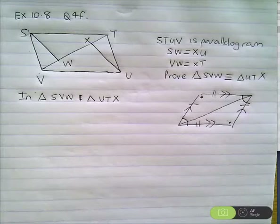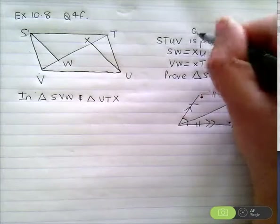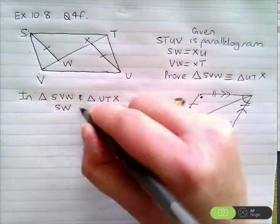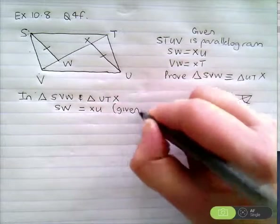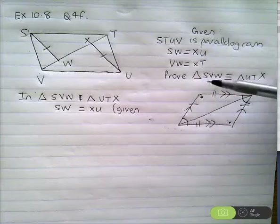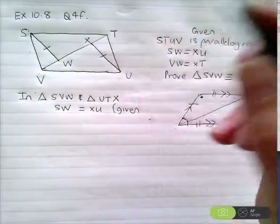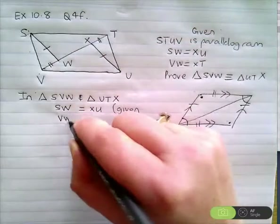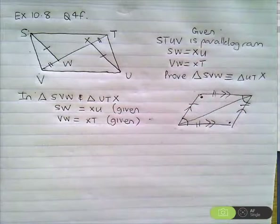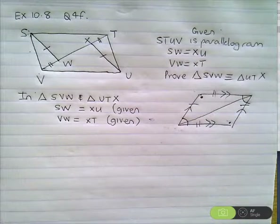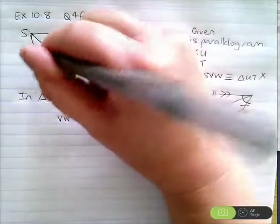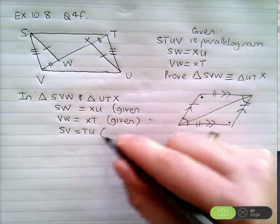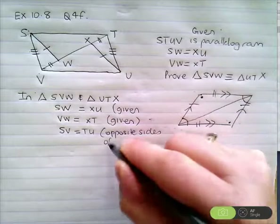They've already given us some information, so let's use what they've given us. Put a single dash on those. We know that SW equals XU — that was definitely given in the question. VW equals XT — that was also given. These are going to be a little bit easier at the beginning because we're learning. Now, opposite sides — yes. So we are going to say that SV equals TU. Reason? Opposite sides of parallelogram are equal.